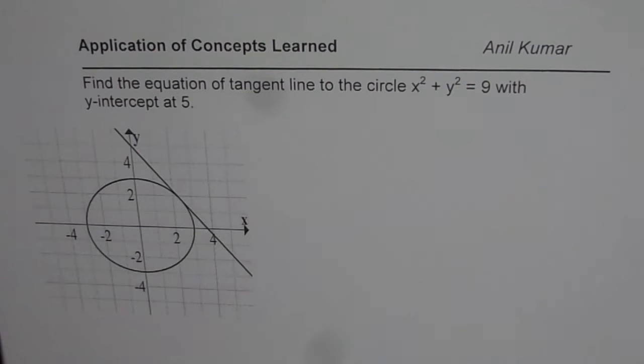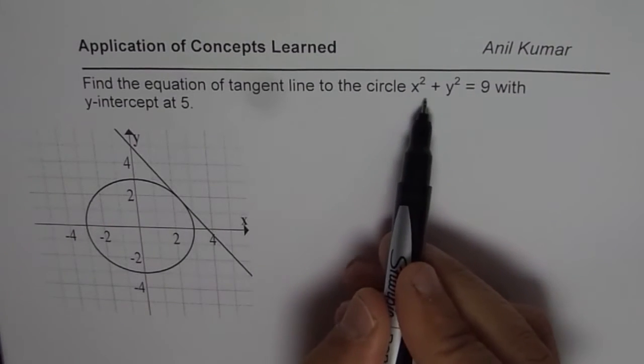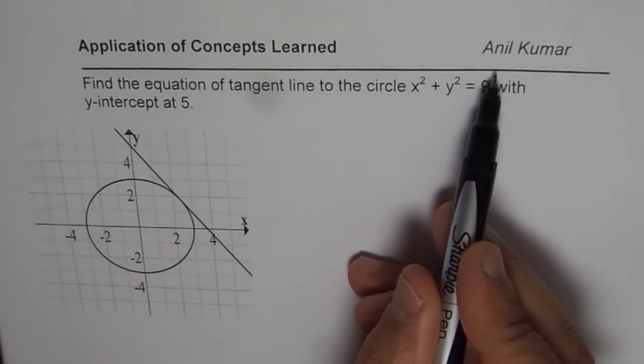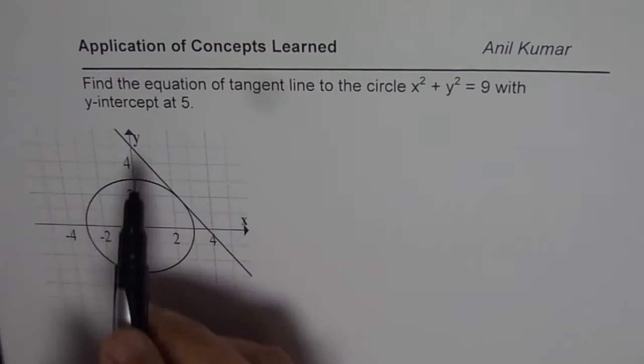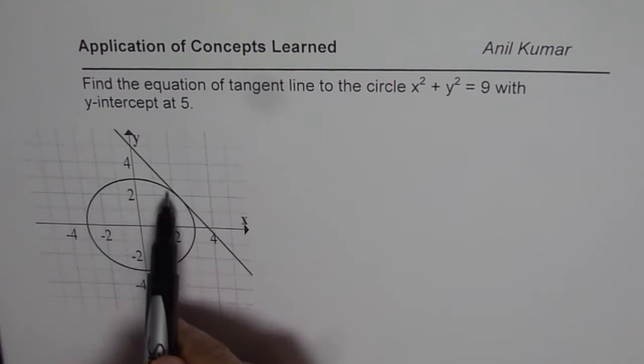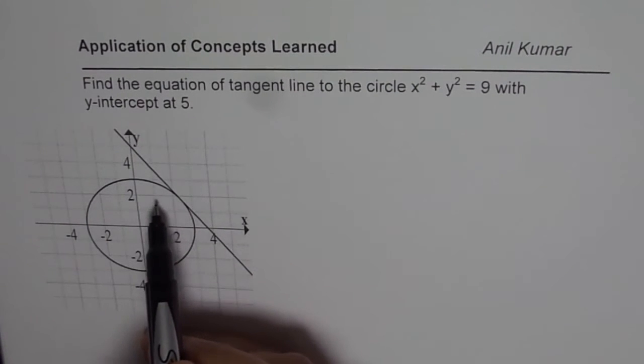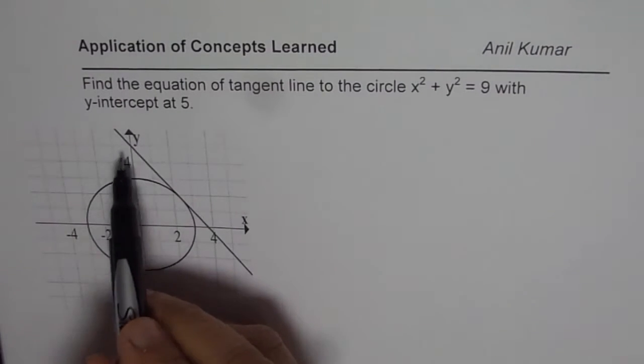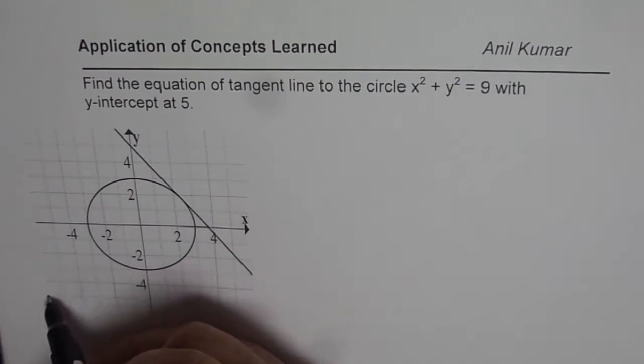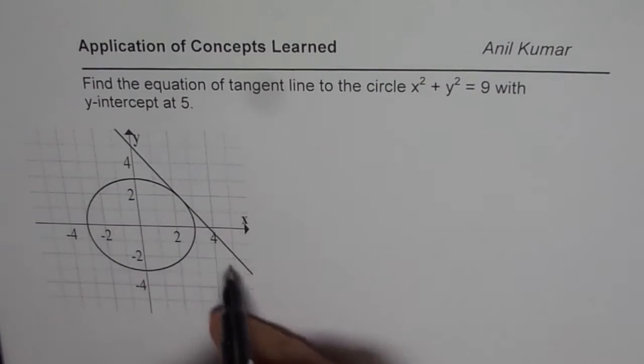So, I have a diagram here for you. That is the circle, which is x square plus y square equals to 3 square. So, that is 3, the radius. And we have a line here. There could be 2 as you could see with y intercept of 5. One I could draw with negative slope also. But I have drawn one here for you.